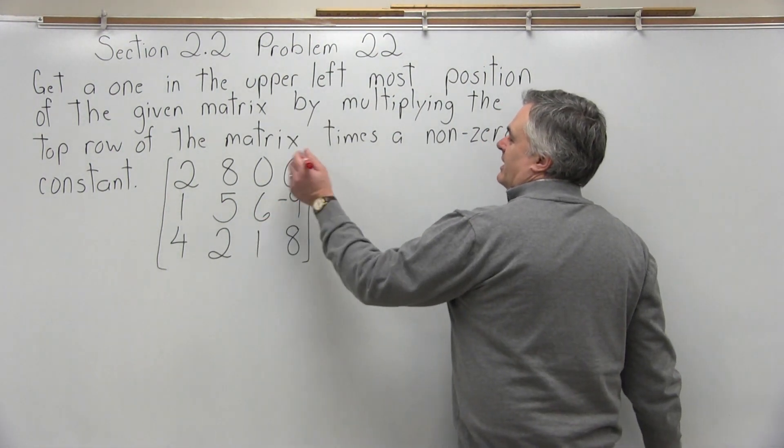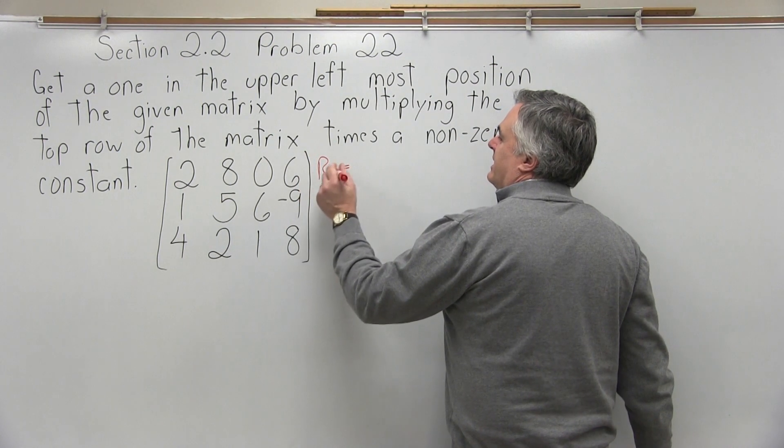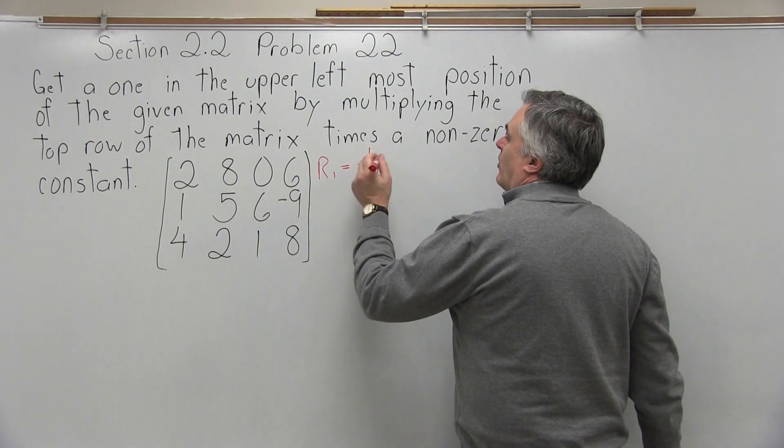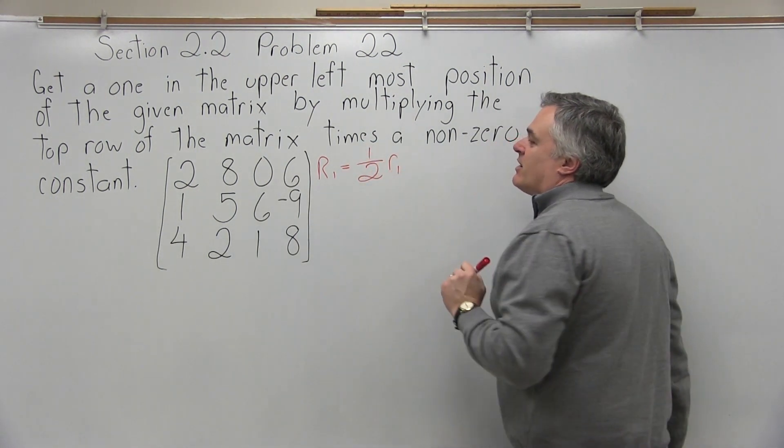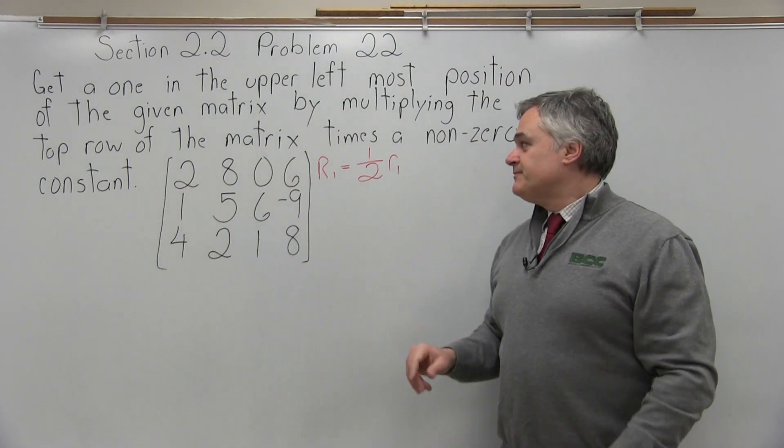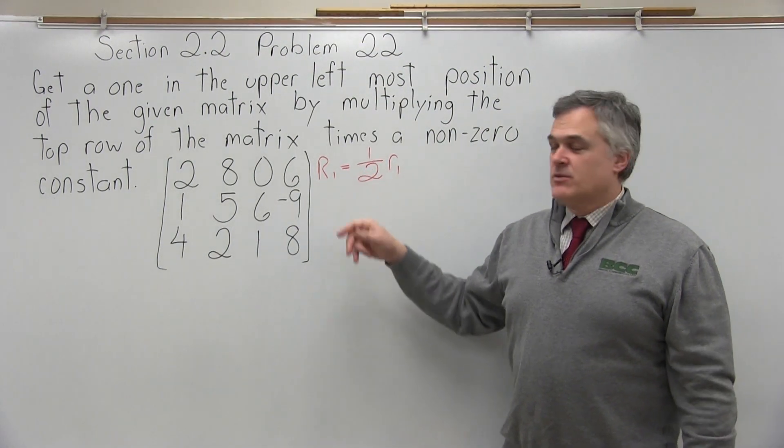So to get the 1 using the method that's required, we're going to do row 1 equals 1 over the value that must become a 1, so for this particular example 1 over 2 times the entire row. Not just that upper leftmost position but the entire row. Times 1 over 2 is the same as divide by 2, you could think of it either way.